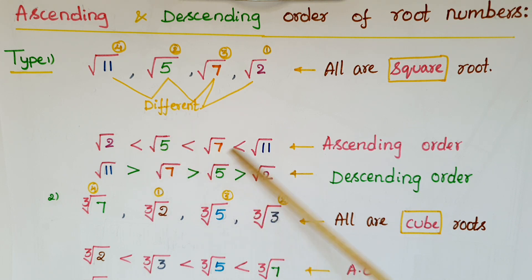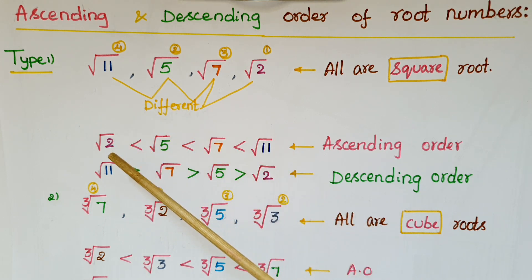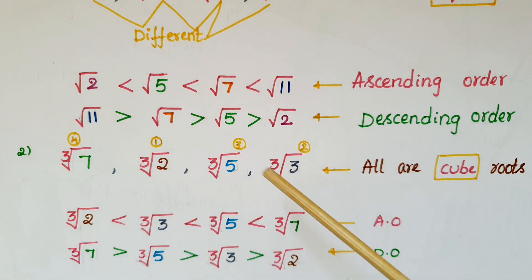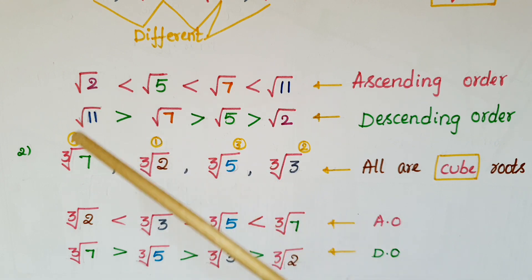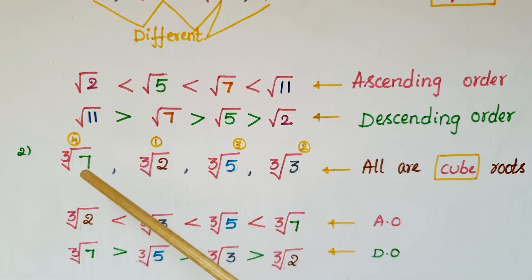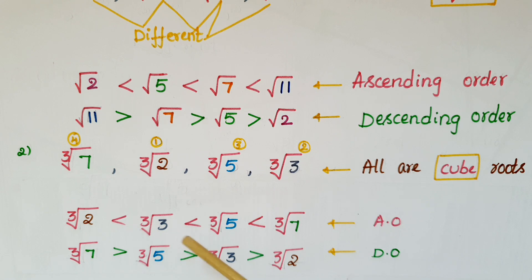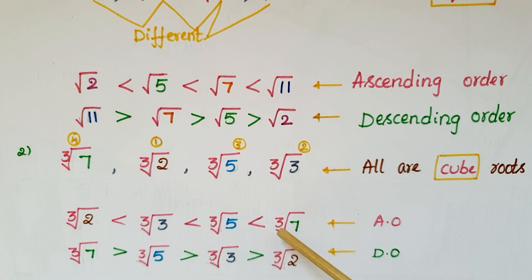Continuing: square root of 7, and square root of 11. If you write these numbers in reverse order, that is the descending order. The next example is: cube root of 7, cube root of 2, cube root of 5, cube root of 3. All are cube roots, so find the largest — that is 7 — and the smallest is 2. Ascending order: cube root of 2 < cube root of 3 < cube root of 5 < cube root of 7. Write in reverse order for descending order.